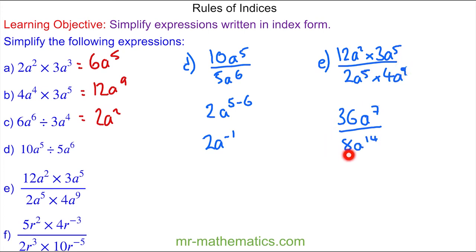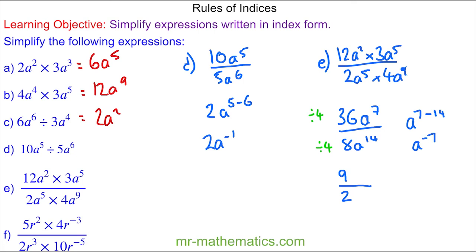I can simplify this fraction by dividing both by 4, so we have 9 over 2. Then we use the division rule to simplify: 7 take away 14 which is a to the power of negative 7. So we have 9a to the 7 over 2, which you could also write as 4.5a to the negative 7.